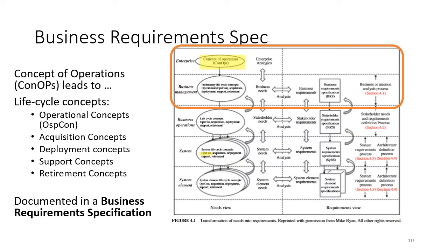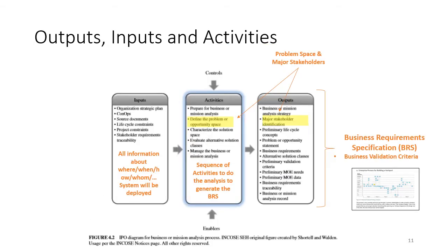That's captured in Figure 4.1 — you can see the CONOPS is part of the business or mission analysis, while the OPSCON comes much later in the definition of system requirements. So we have this process, the business or mission analysis, and the System Engineering Handbook defines the inputs, activities, and outputs.